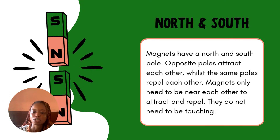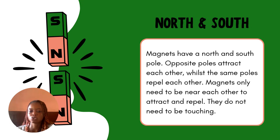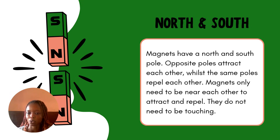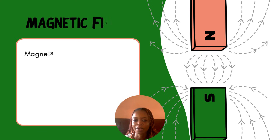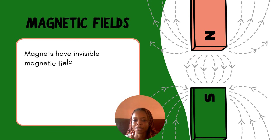When poles are opposite — south to north or north to south — they attract each other. Magnets only need to be near each other to attract or repel; they do not need to be touching. They just need to be very close to each other and then they begin to attract or repel.